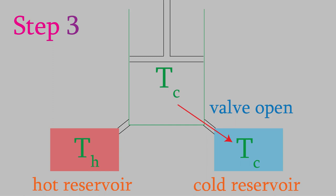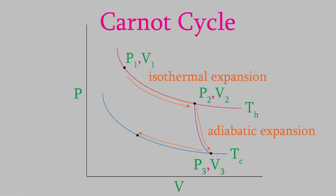On our graph, here's how that looks. It's another isothermal step, but this time it's a compression instead of an expansion. At the end of this step, we're at yet another new pressure and volume, P4 and V4.